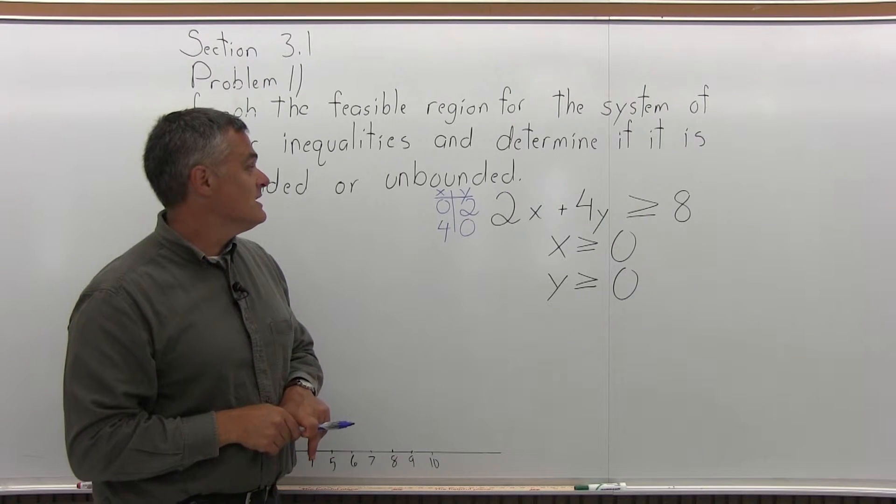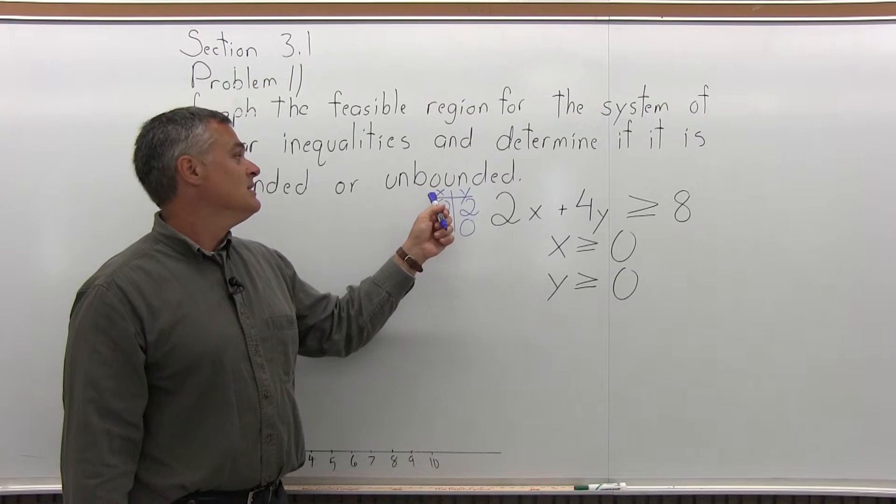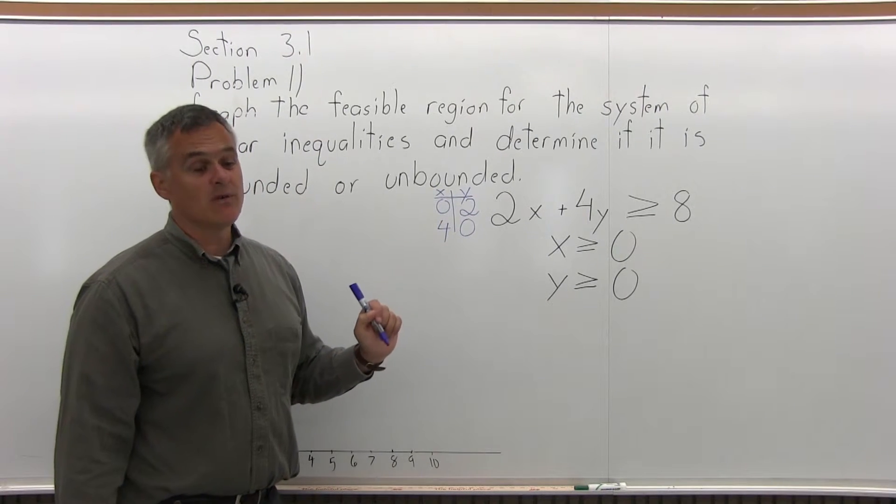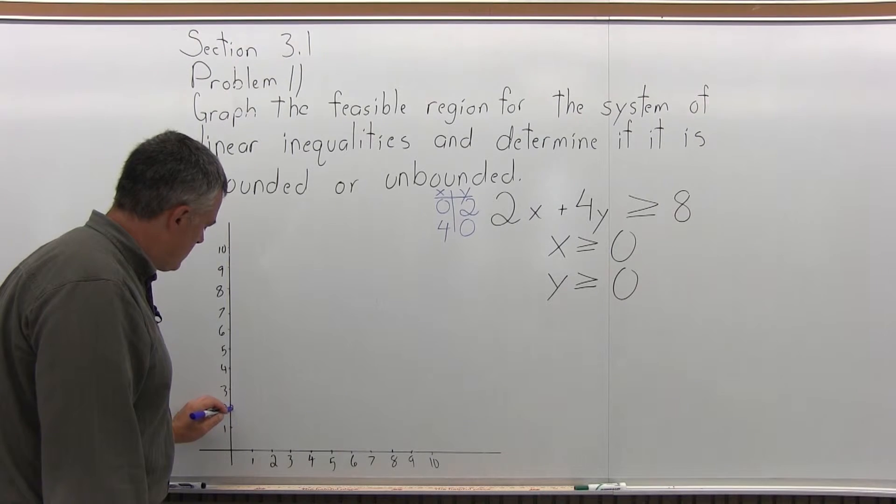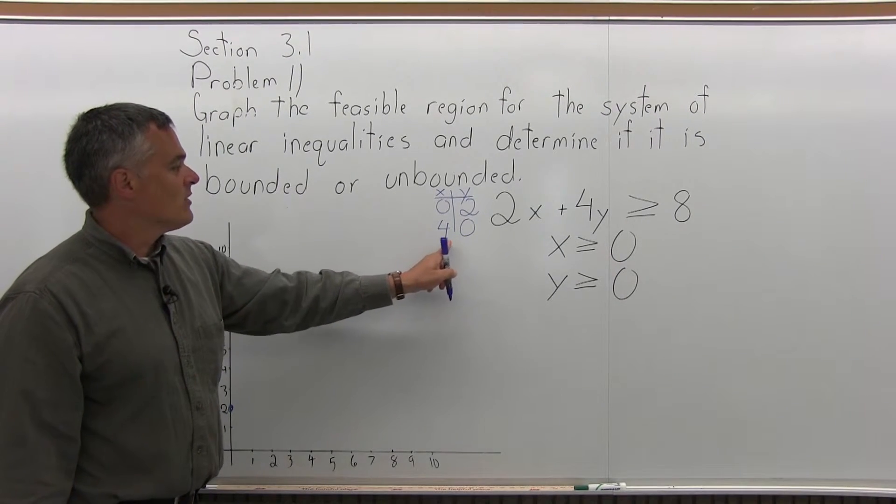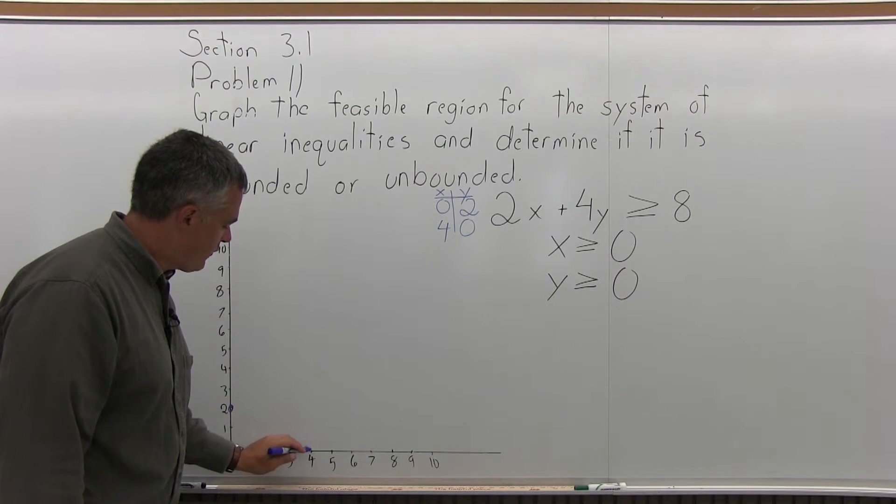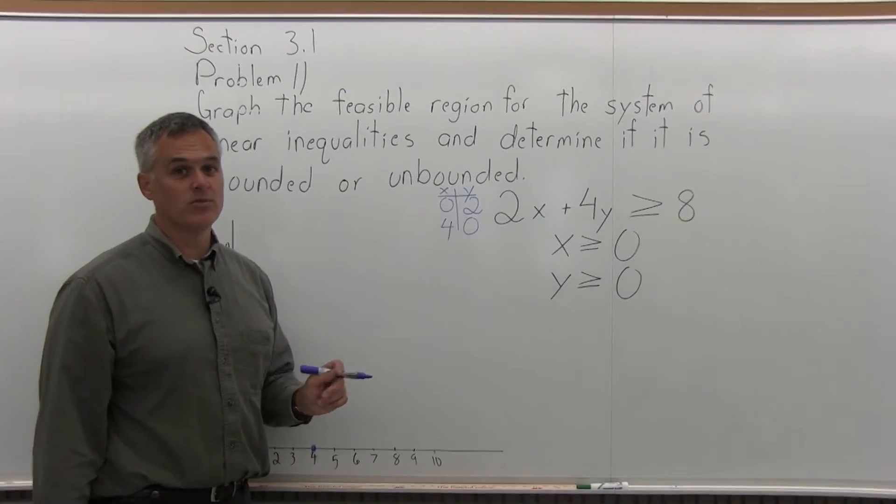Let me start graphing these 2 points. Step 1 is find the 2 points. Step 2 is plot those 2 points on a graph. One of them is 0, 2. So over 0 up 2 would be right here. And the second point, 4, 0, x is 4, y is 0. So over 4 up 0 would be there. That's step 2.